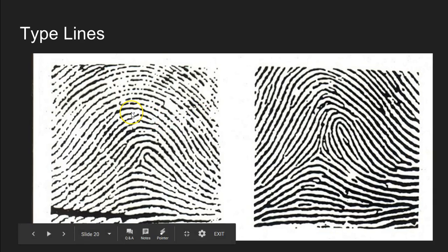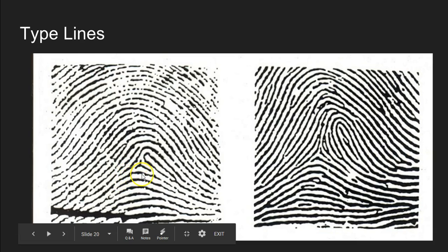Let's look at these two fingerprints. Type lines are the innermost ridges which travel parallel to each other and then diverge. On the left fingerprint, we have ridges traveling roughly parallel to each other like the banks of a river. At a certain point, one line branches off to the left and the other branches off to the right — they open up and diverge. This is one type line and this is the other type line, and where they diverge in the middle is where we find our delta.